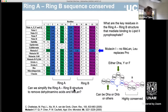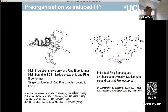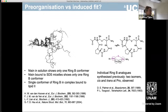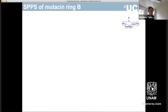Very early work in the field by structural biologists showed that there might be a degree of pre-organization. If you look at the solution structure from 30 years ago, you only see one ring B conformer. Although when you synthesize individual ring B analogues, you get two conformational states out of this. So how do we actually go about making a lantibiotic by solid phase peptide synthesis?